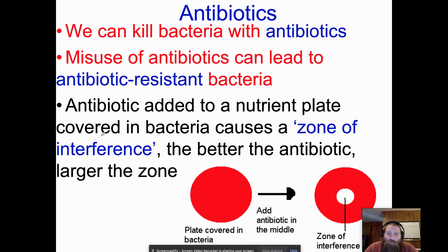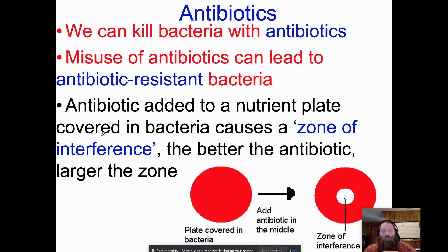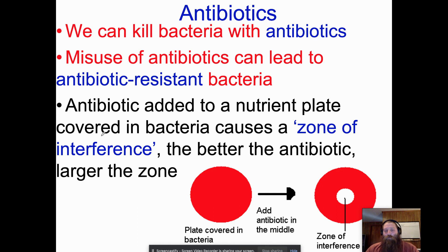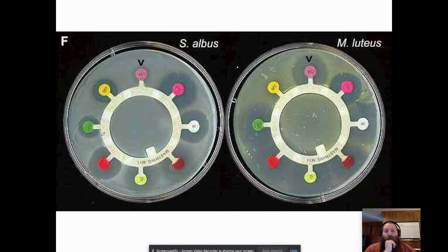Antibiotics means 'against life' — anti means against, bio means life — and they kill bacteria. However, overusing antibiotics kills all the weak bacteria, leaving only resistant ones behind, which is problematic. To test whether an antibiotic will kill a specific bacteria, we look for a zone of inhibition on a petri dish. We grow bacteria until it covers the dish, then place a piece of filter paper soaked in antibiotic in the center and observe how much of the bacteria dies — the bigger the zone of inhibition, the better the antibiotic.